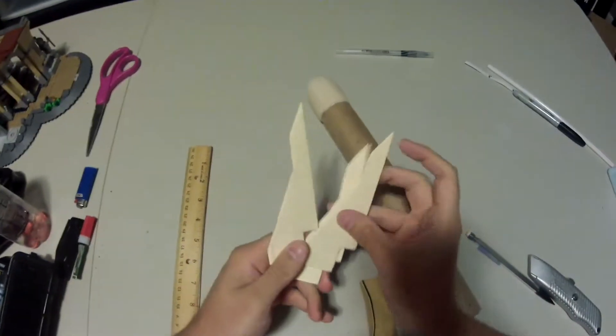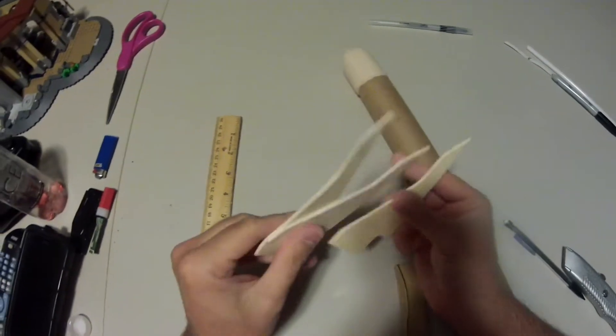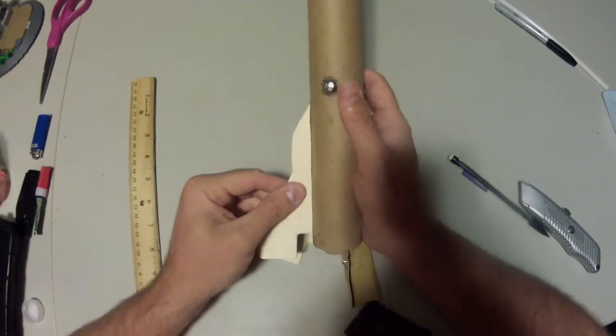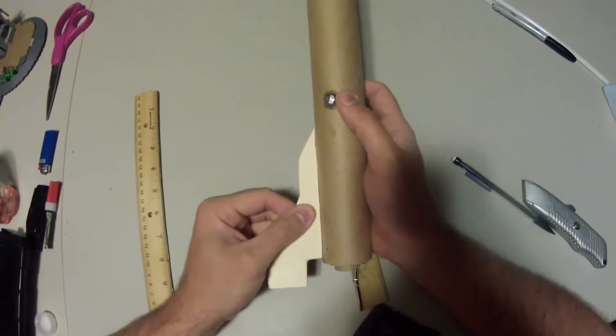Once that's complete you're going to want to hold each one up to the rocket tube to see where you need to sand a little bit more for each one individually. You don't want there to be any gaps between your rocket fin and your rocket.